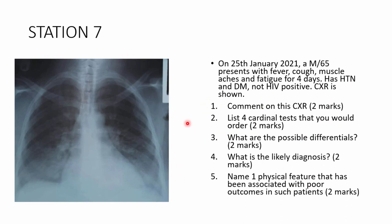Station 7: On the 25th of January 2021, a 65-year-old male presents with fever, cough, muscle aches, and fatigue for four days. He has hypertension and diabetes and is not HIV positive. The chest X-ray is shown. Comment on the X-ray. List four cardinal tests to order. What are the possible differentials? What is the likely diagnosis? Name one physical feature associated with poor outcome.